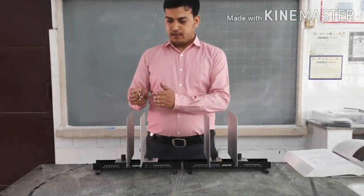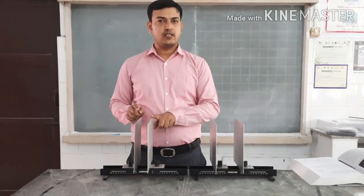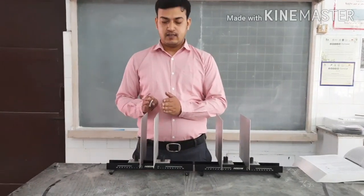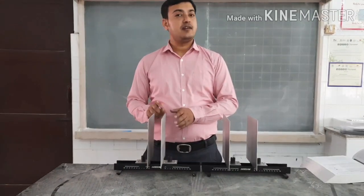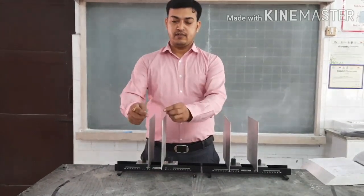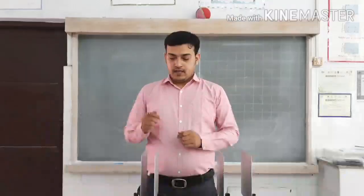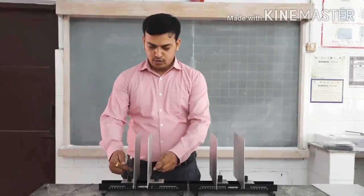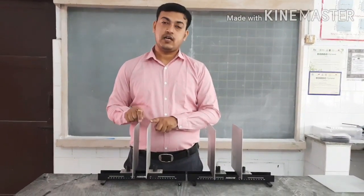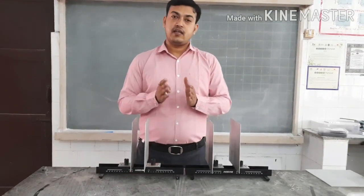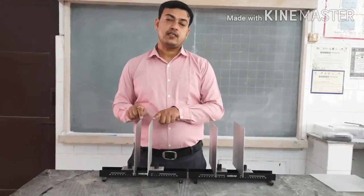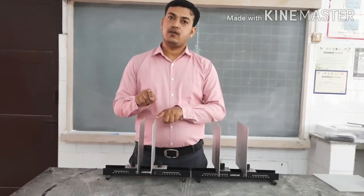Since the plates are now charged — one positively and one negatively — this results in the setup of an electric field between the plates, and hence a potential difference will also be set up between the two plates. The electric field at any point between the plates depends on the amount of charge on the plates, and therefore the potential difference also depends on the charge.